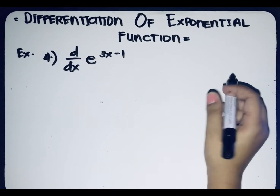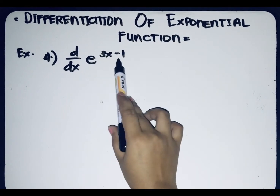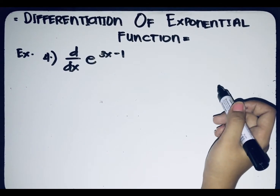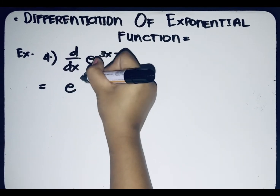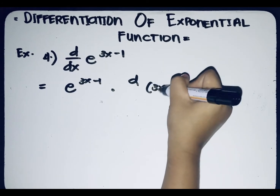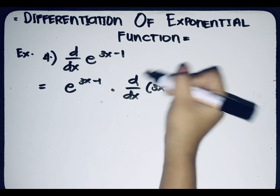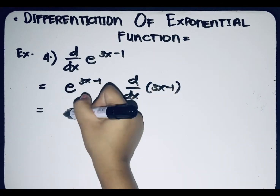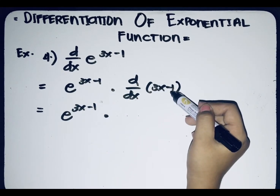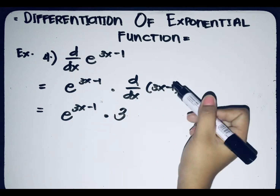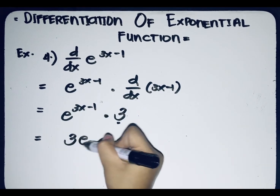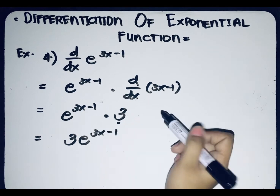For the fourth example, find the derivative of e raised to (3x − 1) with respect to x. We apply the second formula, giving e raised to (3x − 1) multiplied by the derivative of (3x − 1) with respect to x. The derivative of (3x − 1) equals 3, so placing the constant in front, the final answer is 3 times e raised to (3x − 1).